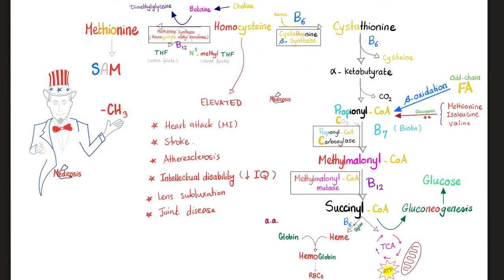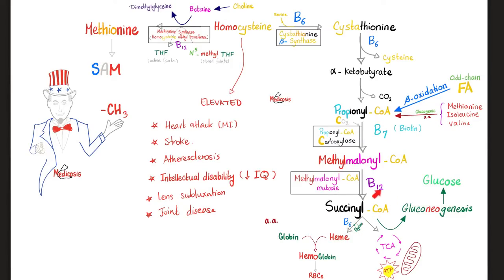Recall from my video on homocysteinuria that homocysteine has two famous options: it can become methionine, or it can go this way to become cystathionine. Cystathionine will become alpha-ketobutyrate, and cysteine will leave the chat. Then alpha-ketobutyrate will become propionyl-CoA. By propionyl-CoA carboxylase, I get methylmalonyl-CoA. By methylmalonyl-CoA mutase, I get succinyl-CoA. Succinyl-CoA can help me make glucose through gluconeogenesis, or it can enter the TCA cycle to give me energy — ATP — or it can join with glycine to give me heme.